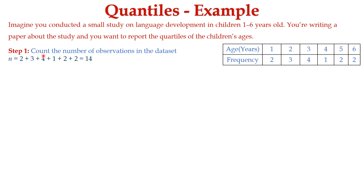In step 1, we have to find the count of the number of observations in the data set. Here, observations are nothing but the frequencies. The frequencies are 2, 3, 4, 1, 2, and 2. So N is equal to 2 plus 3 plus 4 plus 1 plus 2 plus 2, which is equal to 14.